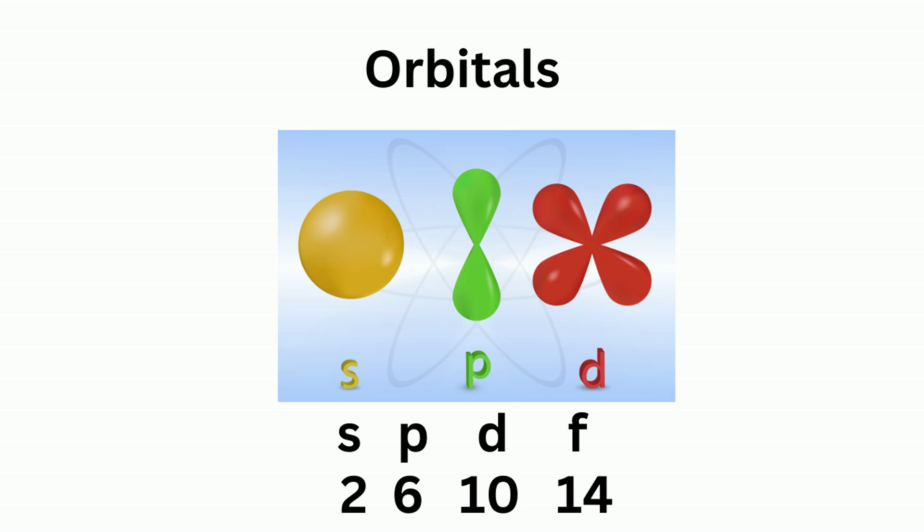And if you'll notice, they go up. So with the s orbital, you have two electrons, and that's kind of its shape. Then it goes up by four. The p actually has three orbitals that hold two electrons for a total of six. d, notice how it goes up by four, has five orbitals with two electrons each for a total of 10, and then f has seven orbitals, and each can hold two for a total of 14.